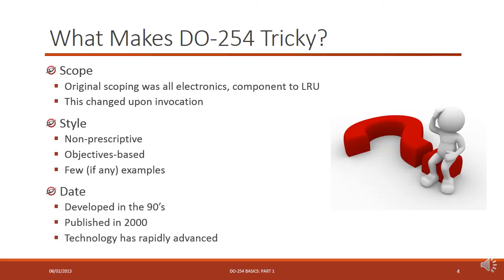The third aspect that makes this tricky is the date. As I mentioned, the document was developed in the 90s and published in 2000. Just consider how quickly technology has advanced since then — it's now 2013, and 13 years ago people weren't considering systems on a chip. Today, the lines between hardware, software, and systems are really blurred and intertwined when you're talking about system-on-a-chip designs. Those sorts of things weren't mainstream practices back then and are not included in the document, so there are a lot of gray areas in terms of what compliance means in the context of advanced technologies we have today.